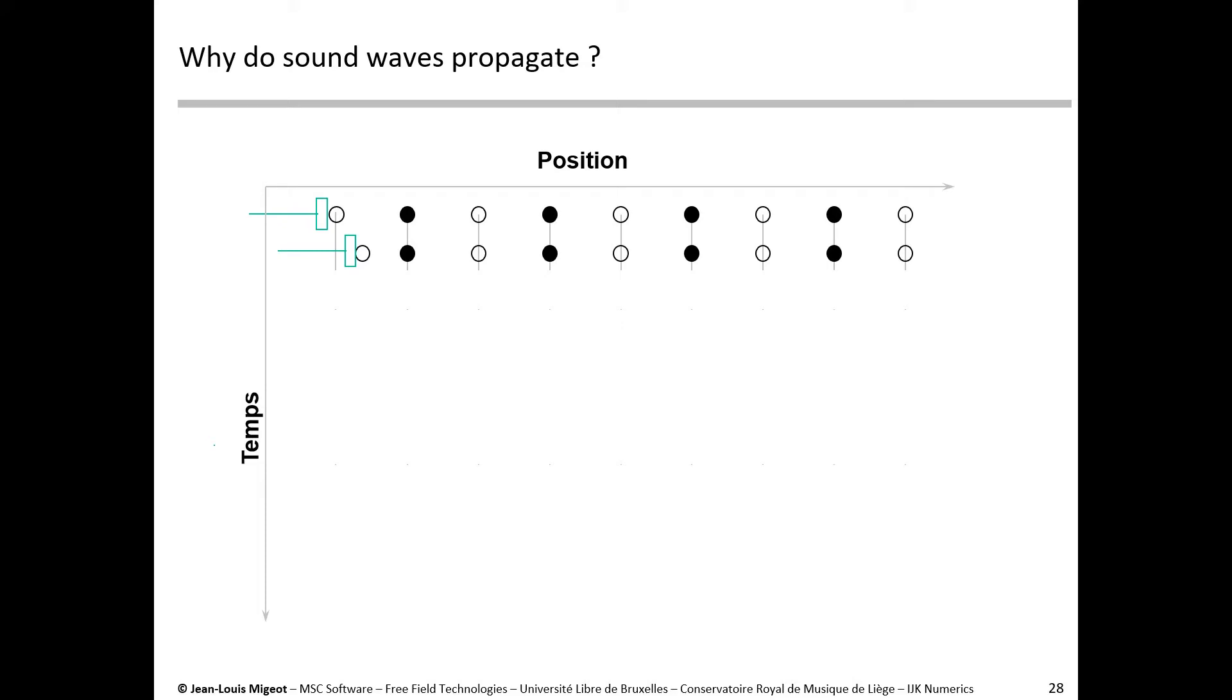The air between the first and the second molecule is compressed, but because it has some compressibility, the pressure has increased, and it is pushing on the second molecule. But the molecule has a certain inertia, and so has not yet started moving. All the energy is stored as deformation energy in the spring that connects the two little air masses.